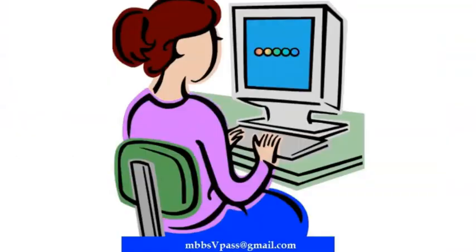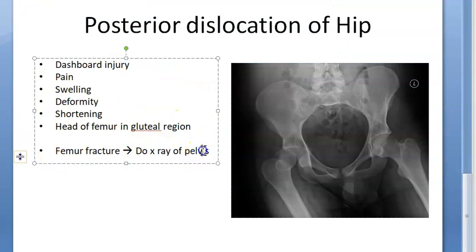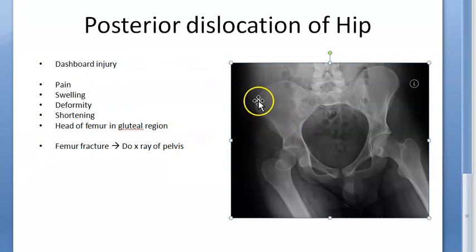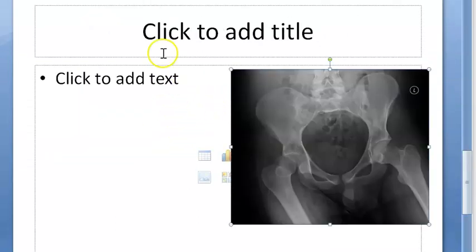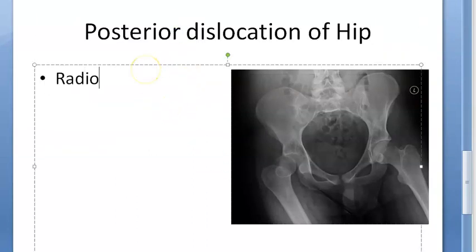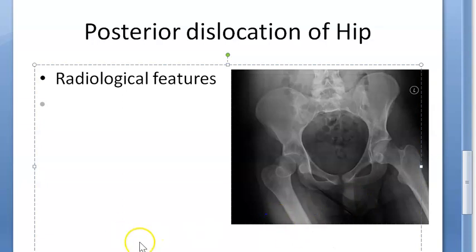Now let's look at the radiological features of posterior dislocation of hip. The femoral head is out of the acetabulum — that is the dislocation — and it has gone posteriorly. The thigh is internally rotated, so you will not see the lesser trochanter. Shenton's line is broken — Shenton's line, which normally forms a smooth arc, will be disrupted in this case.